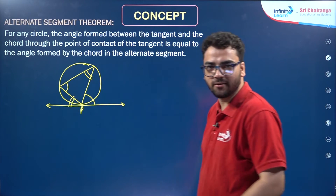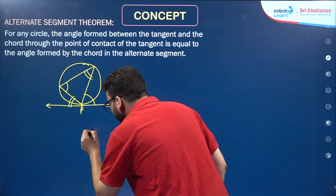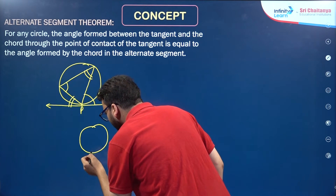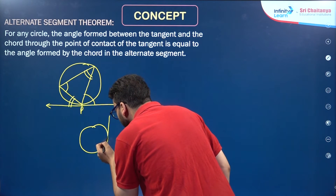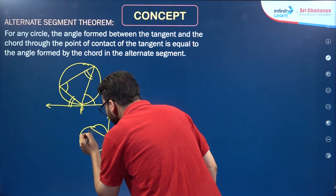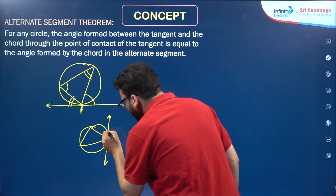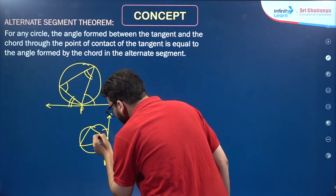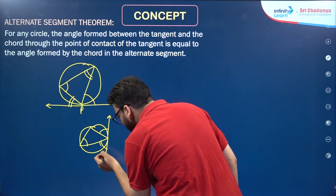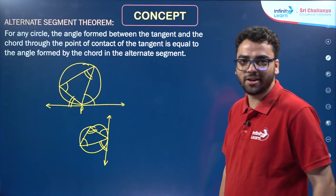That is the alternate segment theorem. Using one more figure to explain: I have a circle, and at this point I'm making a tangent, and using this point I'm making a triangle. So this angle so formed is equal to this angle, and this angle so formed is equal to this angle. That is the alternate segment theorem.